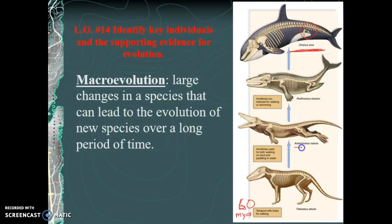Over millions of years, some members of that population started to adapt to a more aquatic lifestyle. This gives us the species known as Ambulocetus. Think about the difference between a dog and an otter — both mammals with four legs. Otters are much more adaptable to water; they can come out on land but work really well in water. Think of Ambulocetus like an otter: not completely aquatic, not completely terrestrial — kind of an in-between species that goes back and forth between the two environments.